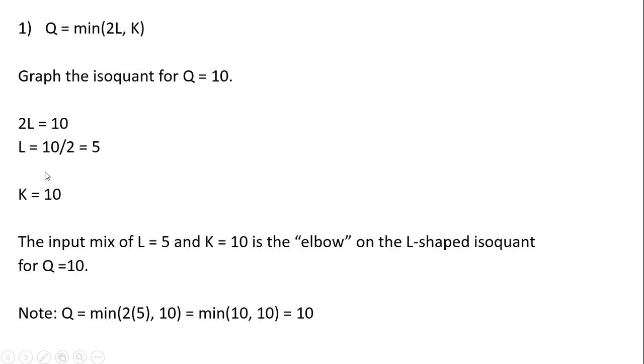Note here, if we were to plug these values, L equals 5 and K equals 10, into the production function, you're going to get the minimum of 2 times 5 or 10, so the minimum of 10 or 10 is just 10. So indeed, this point is a point on the isoquant for Q equals 10.